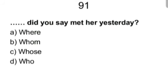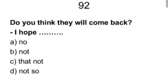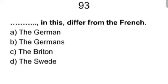Ninety two. Do you think they will come back? I hope blank. No, not, that not, not so. Answer is not. Do you think they will come back? Question mark. I hope not. Ninety three. Blank in this differ from the French. The German, the Germans, the Britain, the Sweden. Answer is the Germans. The Germans in this differ from the French. Ninety four. He was late again, blank was to be expected. What, so as, such as, which? He was late again, which was to be expected.